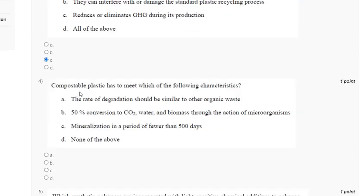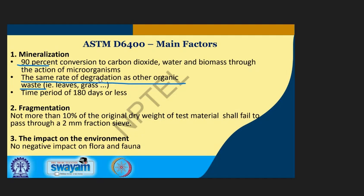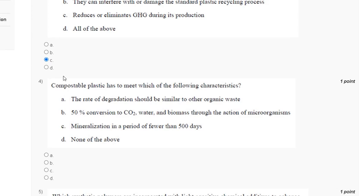Question 4: Compostable plastic has to meet what characteristics? First, the rate of degradation should be similar to other organic waste; second, 90 percent conversion to CO2, water, and biomass through the action of microorganisms; third, mineralization in a period of fewer than 180 days. Explanation: 90 percent conversion to carbon dioxide, water and biomass through microorganisms, same rate of degradation as other organic waste, and time period of less than 180 days. The correct answer to question 4 is option A — the rate of degradation should be similar to other organic waste.